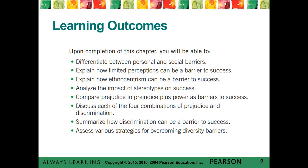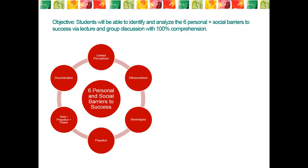Upon completion of this chapter, you will be able to complete the following learning outcomes, beginning with differentiating between personal and social barriers, to the final bullet, assessing various strategies for overcoming diversity barriers. Our objective is for all of you to be able to identify and analyze the six personal and social barriers to success via lecture and group discussion with 100% comprehension.